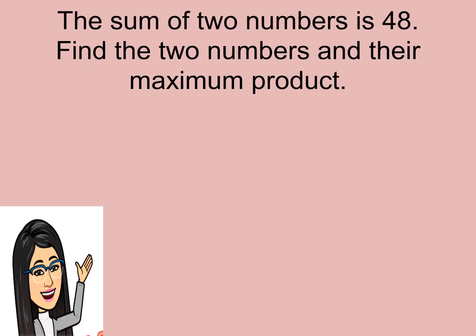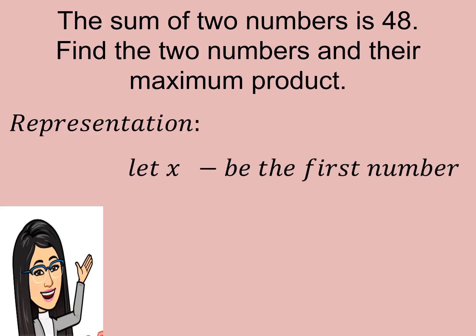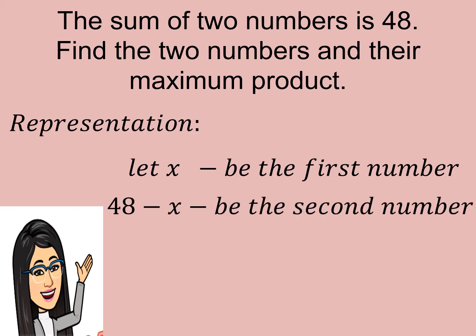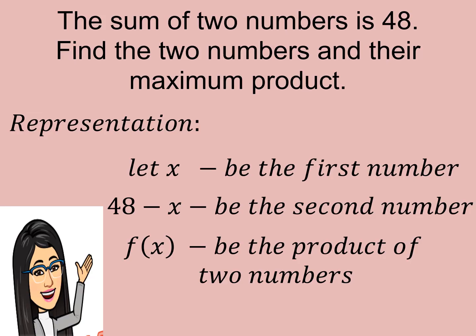Let us start with the number-related problem. The sum of two numbers is 48. Find the two numbers and their maximum product. Let us start with the representation. If we let X as the first number, then we can represent the second number as 48 minus X, since the sum of two numbers is 48, and f(x) be the product of these two numbers.